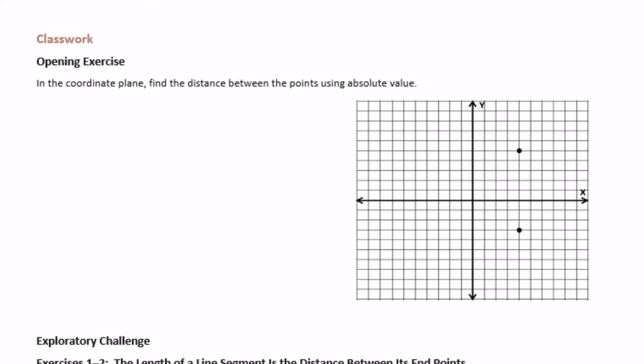In the coordinate plane, find the distance between the points using absolute value. So we have this point right here, which is at 1, 2, 3, 4 — 1, 2, 3, 4, 5. So that's (4, 5). And then we have 1, 2, 3, 4, and then down 3, so this is (4, negative 3).